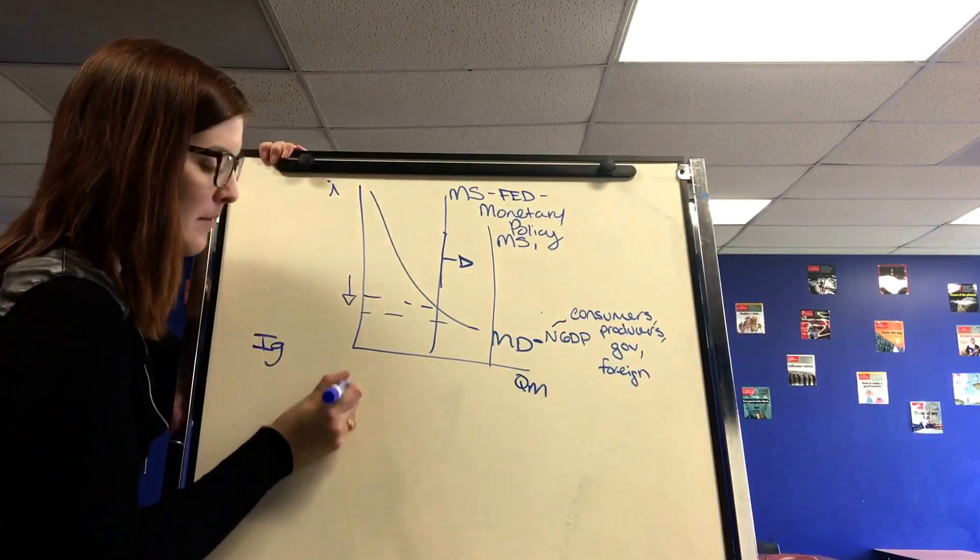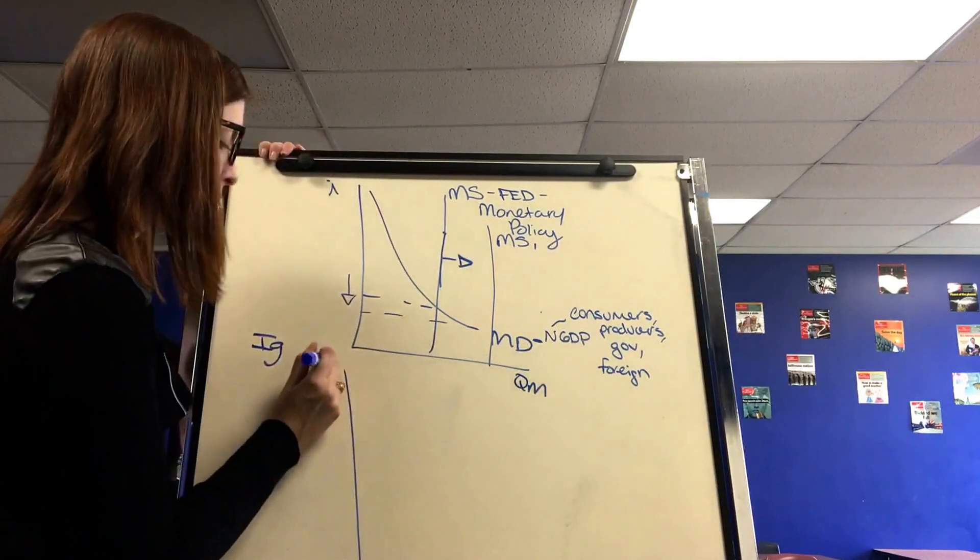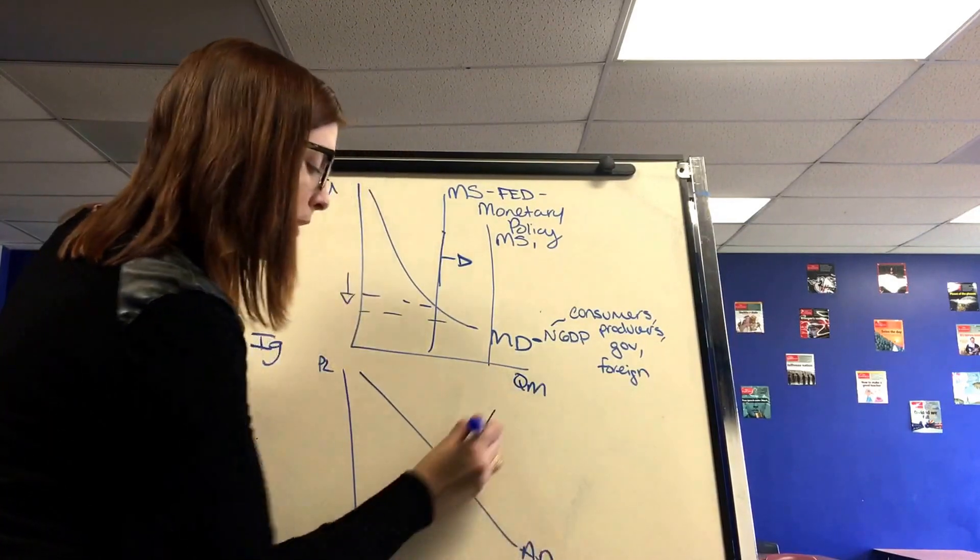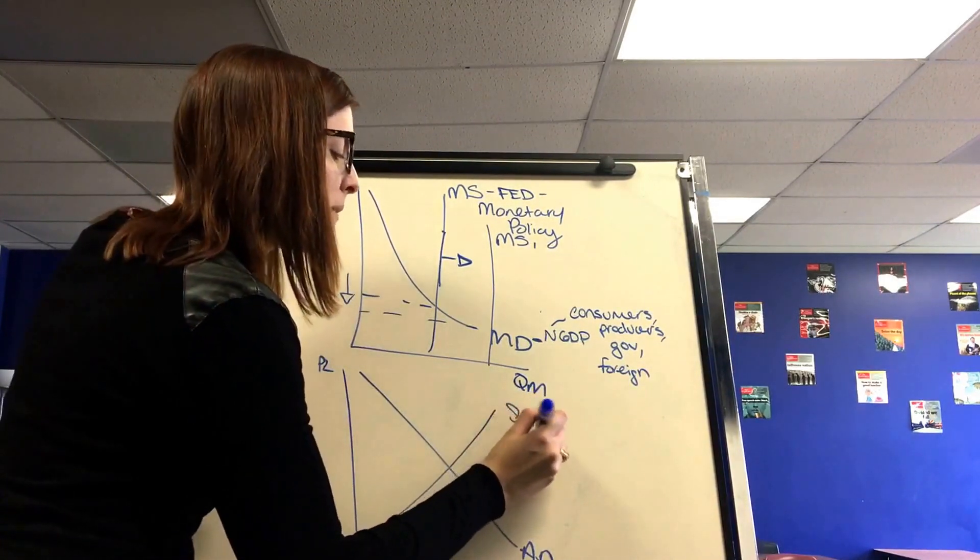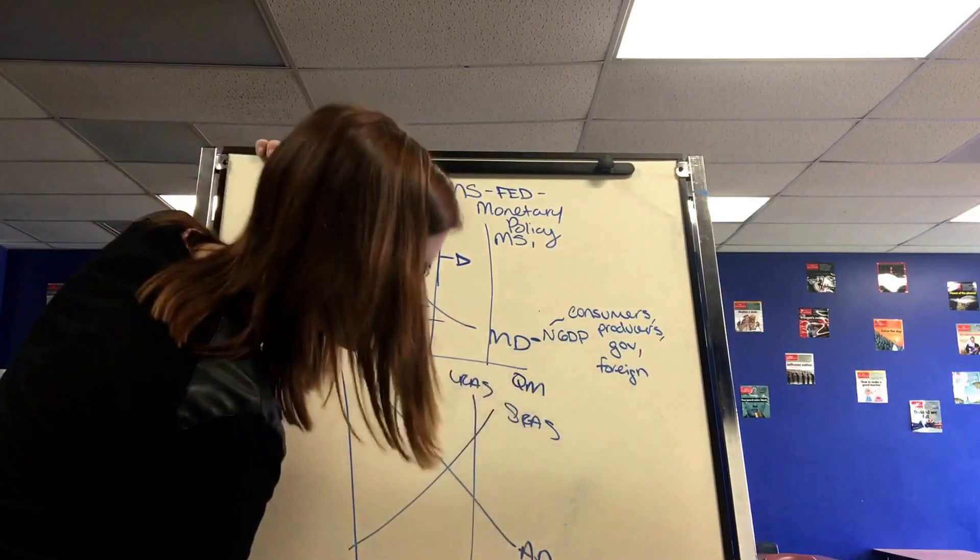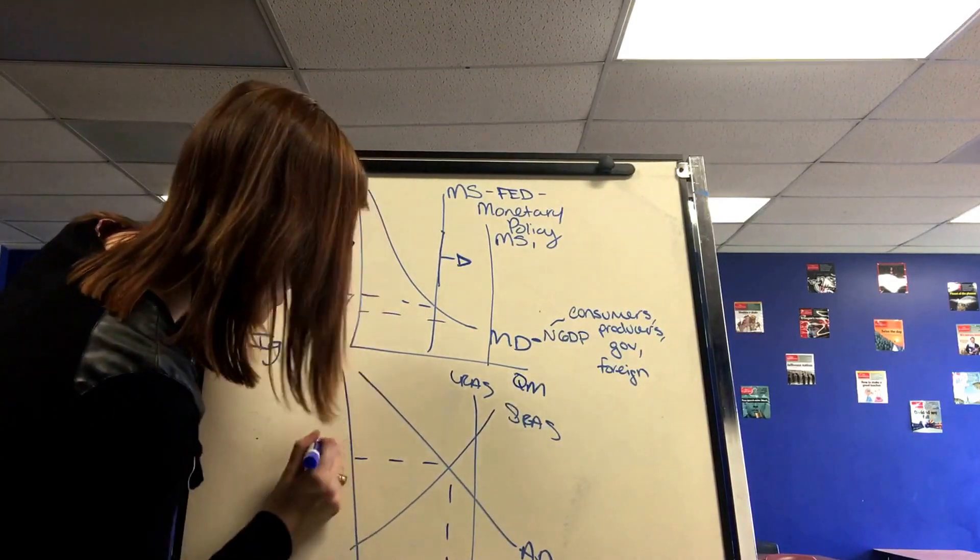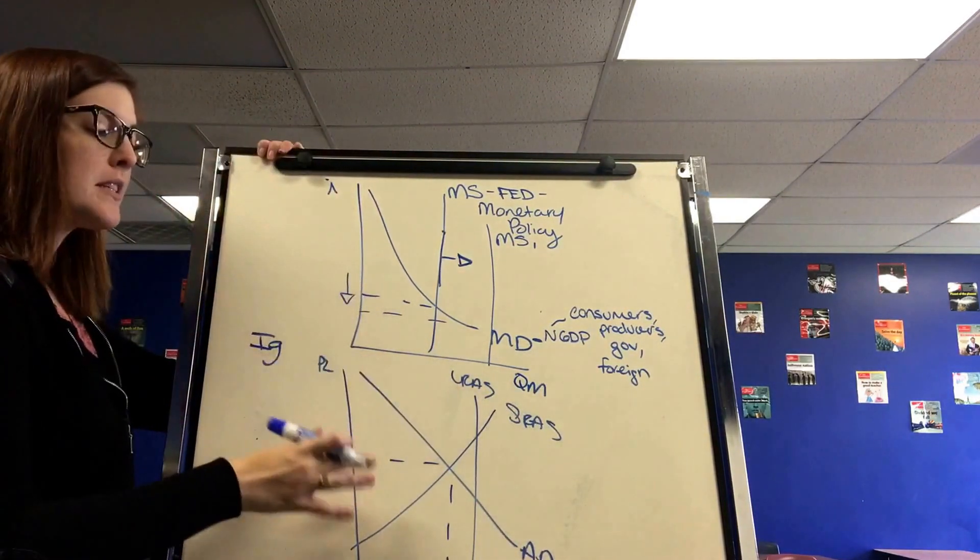And this is significant because that will then affect the aggregate model. So I'm going to draw an aggregate model in a recession. We've already gone over this graph in the reviews. And to show it in a recession, I would start my LRAS to the right of long run equilibrium.